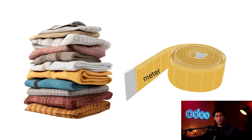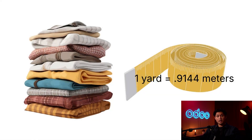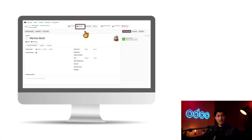My new local vendor measures fabric in yards but my database uses meters to track inventory. The different units might get confusing when we have to place purchase orders in yards and then receive them in meters. Luckily O-Do's unit of measure feature automatically converts between units when I receive products in my inventory, so O-Do will take care of all the confusing calculations for me.